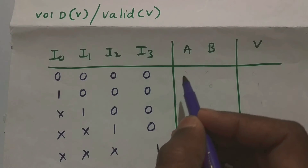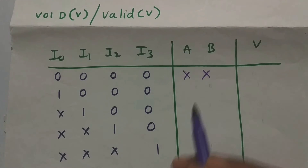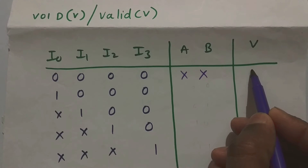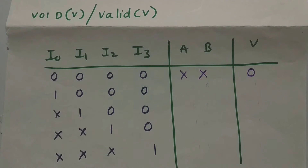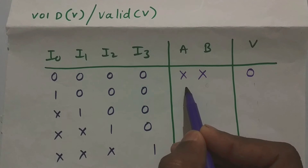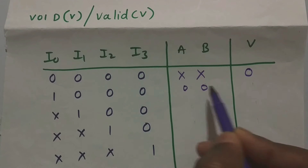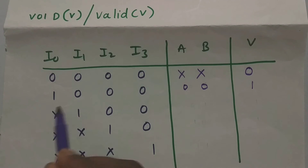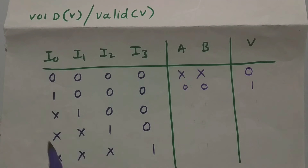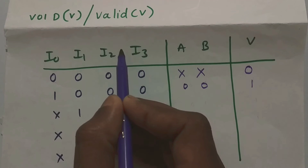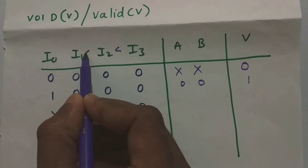Let's take the truth table. When the input is zero zero zero zero, the output will be undefined since we don't want a defined output for all-zero inputs; the valid bit will also be zero. When I0 is high, the output should be zero zero and valid should be one. Since we have I1 high, we don't care about whatever I0 will be, because we are taking MSB priority — the most significant bit has the highest priority.